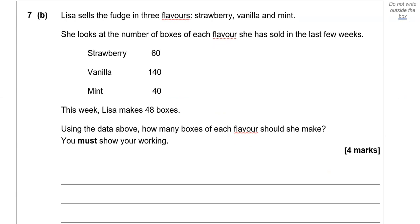Lisa sells the fudge in 3 flavors: strawberry, vanilla and mint. She looks at the number of boxes of each flavor she has sold in the last few weeks. We've got strawberry 60, vanilla 140 and mint 40. This week Lisa makes 48 boxes. Using the data above, how many boxes of each flavor should she make? You must show your working. So there are different ways you could do this, but given that we can't use a calculator, I'm going to simplify and get this as a ratio.